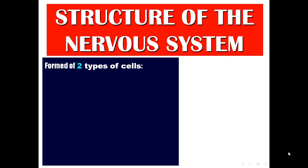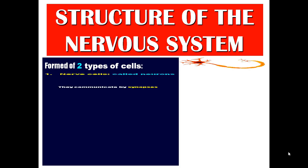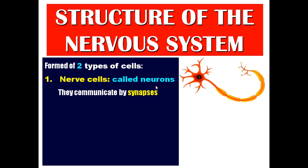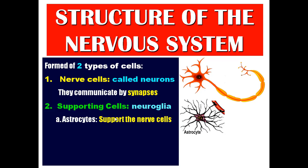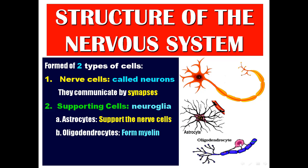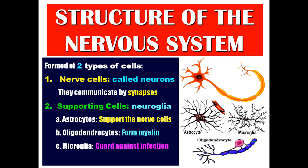The nervous system is formed of two types of cells. Nervous cells, which are called neurons, and they communicate by synapses. The second type is supporting cells, called neuroglia. We have four types of neuroglia: astrocytes for support of the nervous cells; oligodendrocytes for formation of myelin in the central nervous system; microglia, which guard against inflammation or infection of the CNS; and ependymal cells, which line the ventricles.